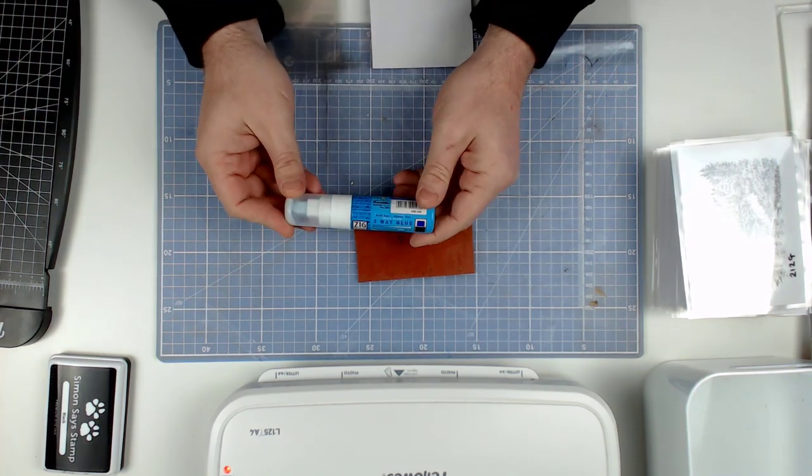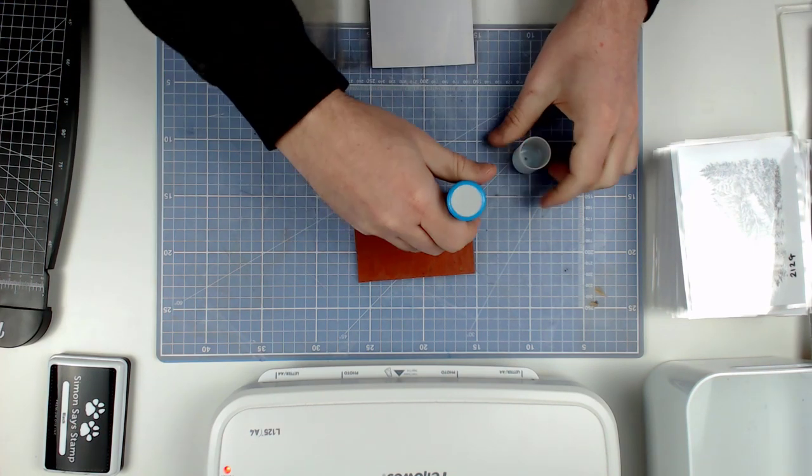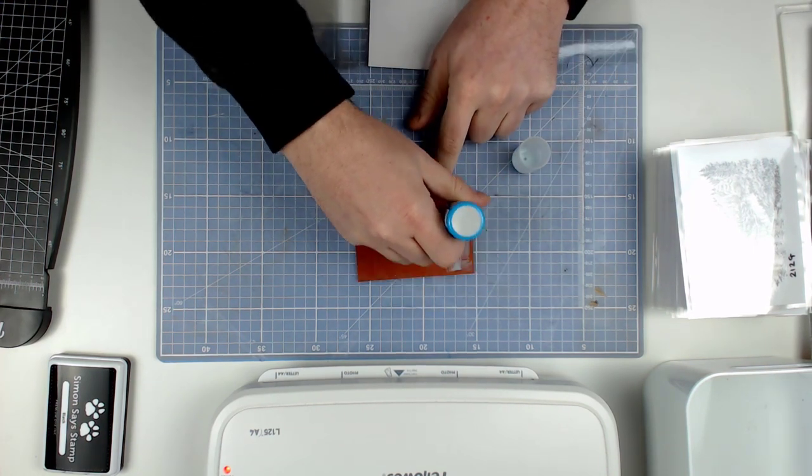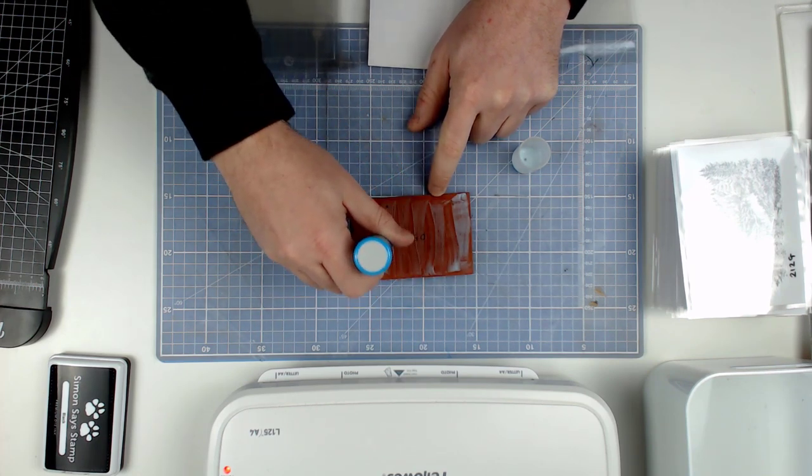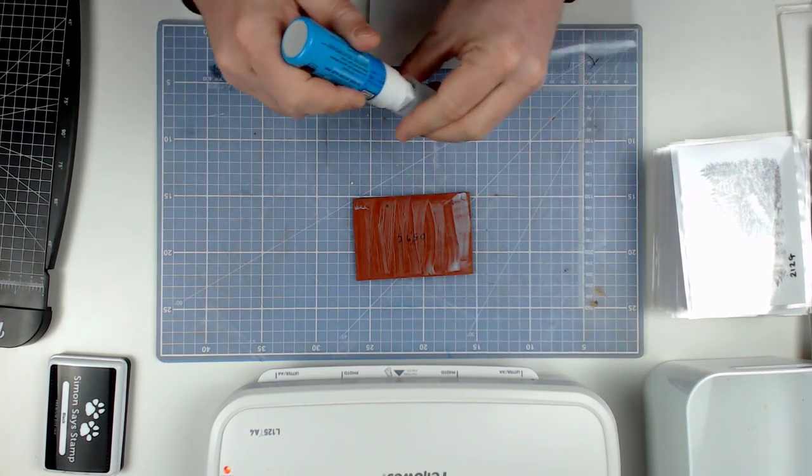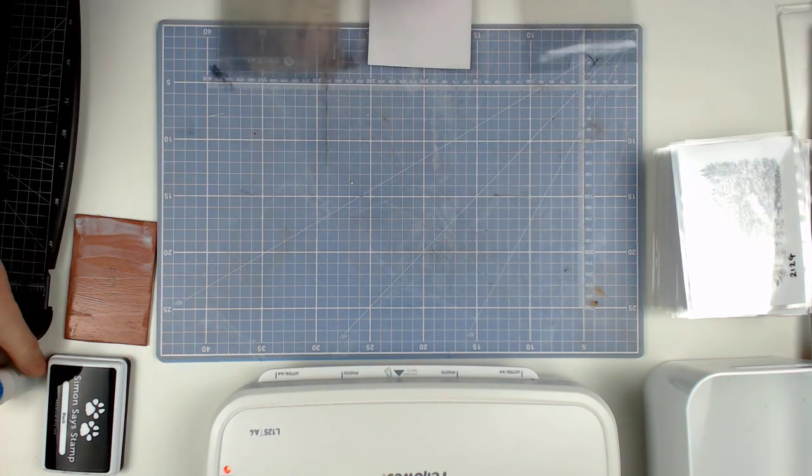Just before I start showing you that, though, I am going to apply some Zig two-way glue to the back of the unmounted stamp. The reason I am doing that now is because then it will have a chance to dry. It goes on blue, which is when it is a permanent bond, but when it dries clear it is a temporary bond.